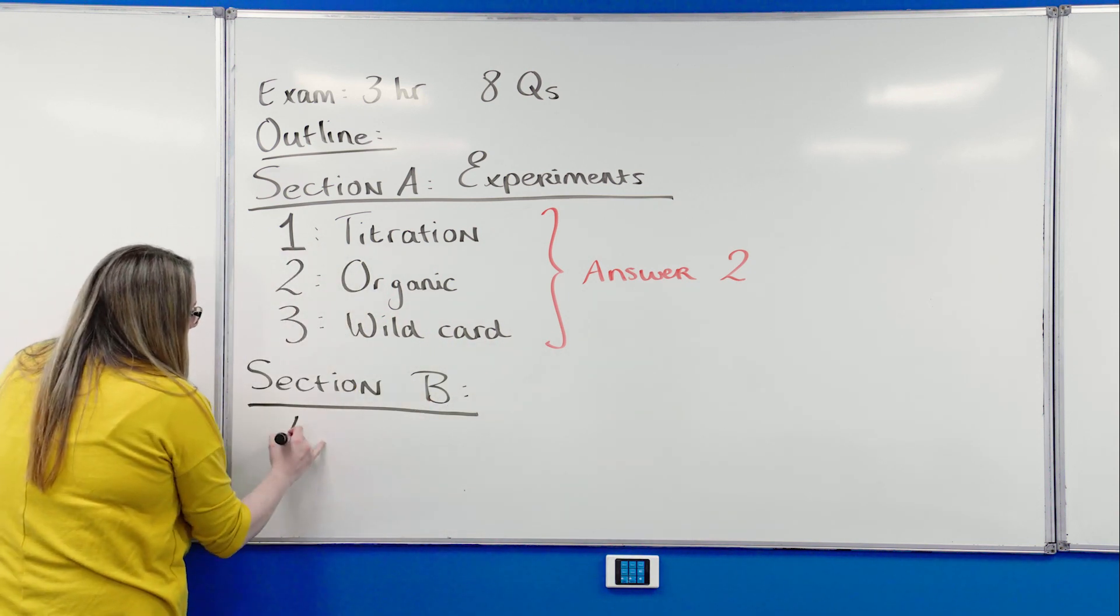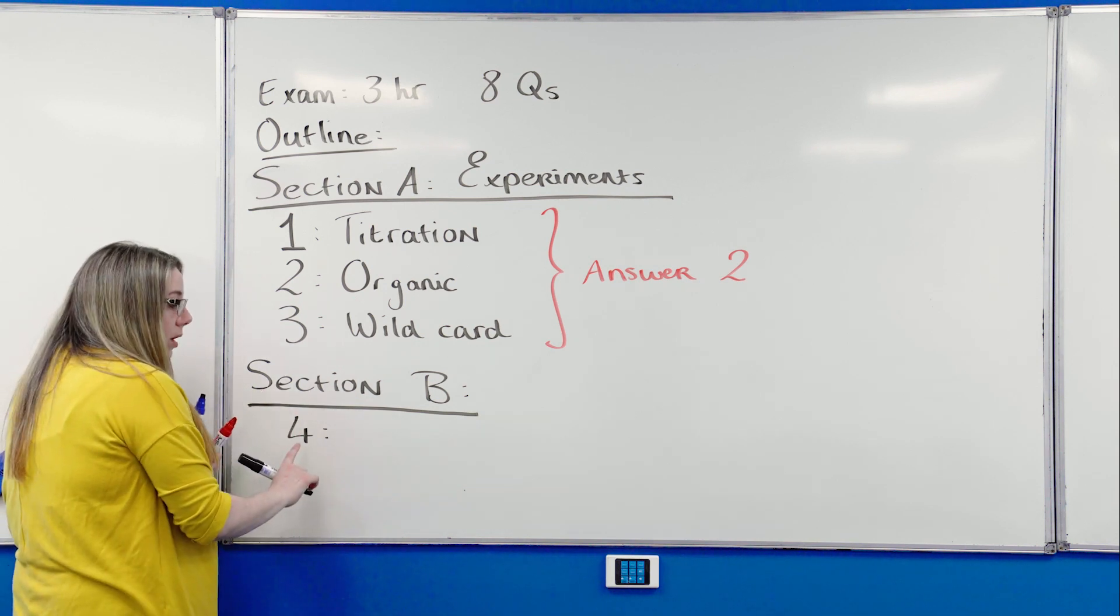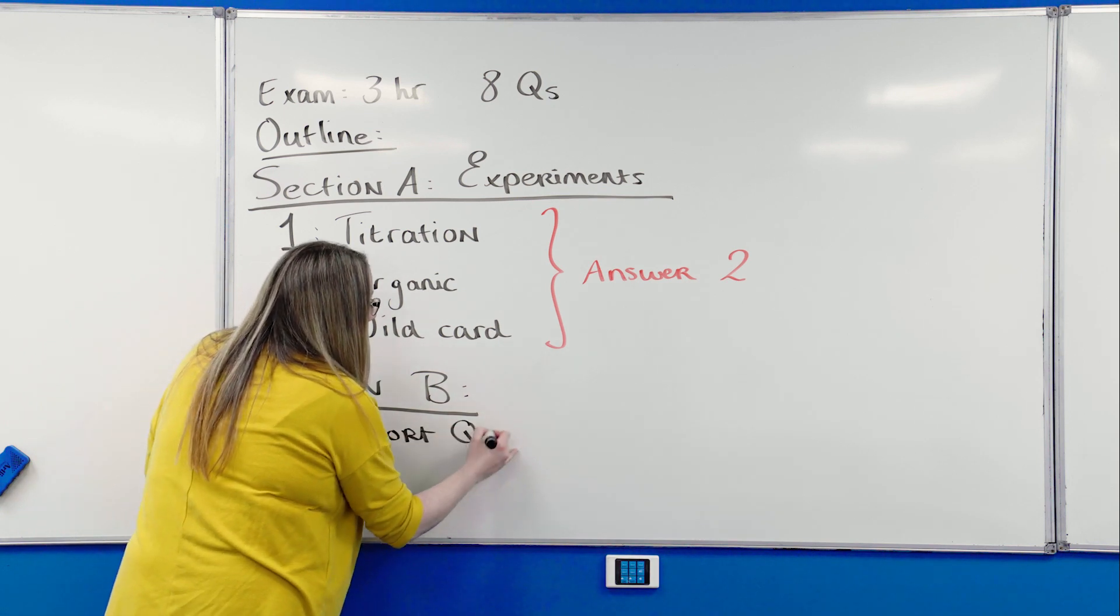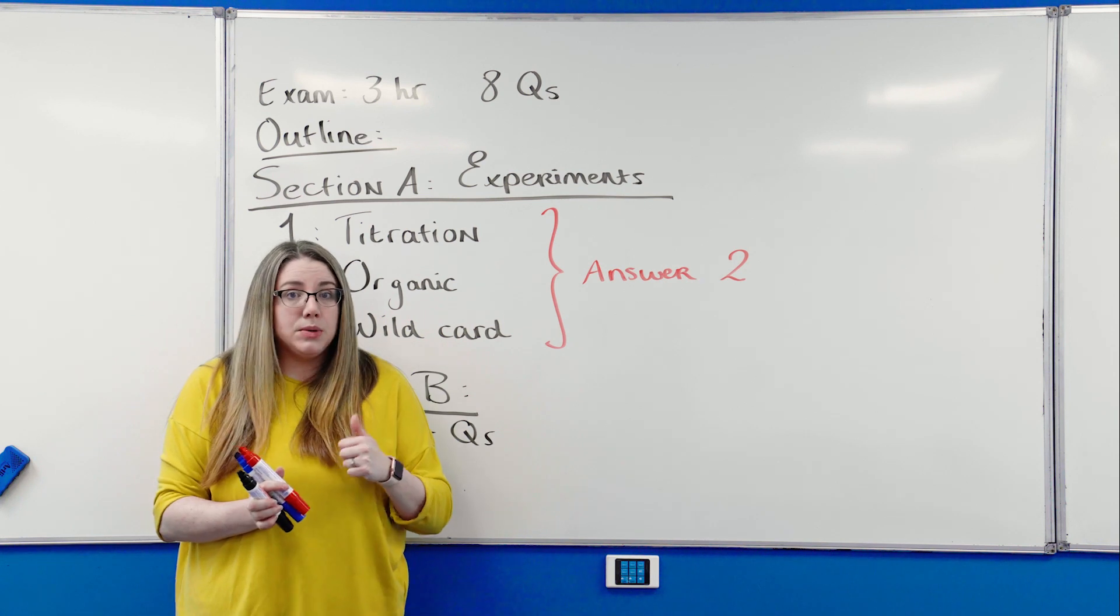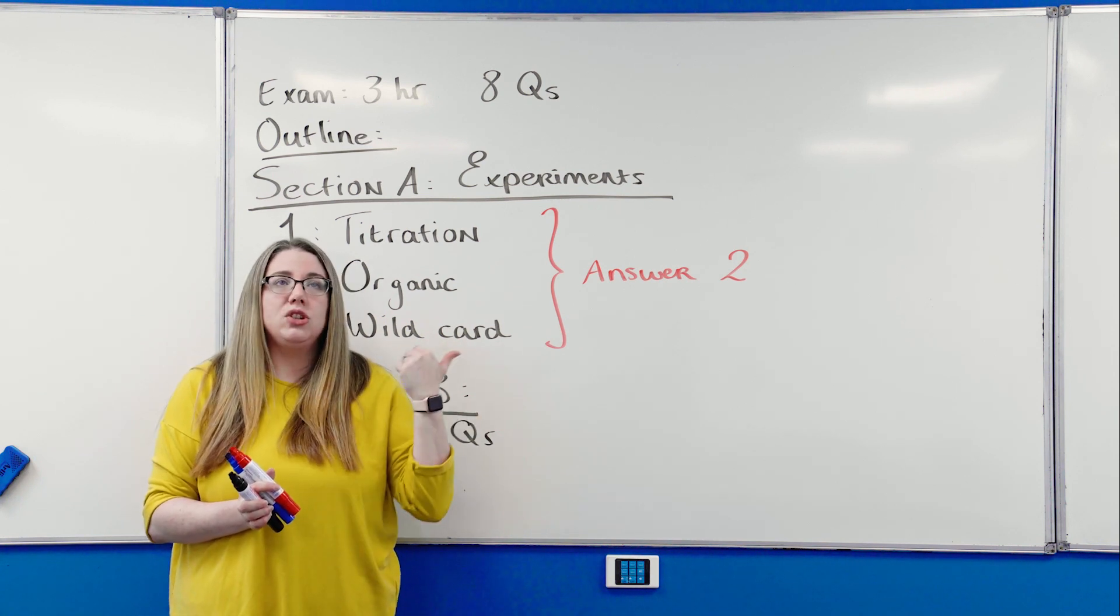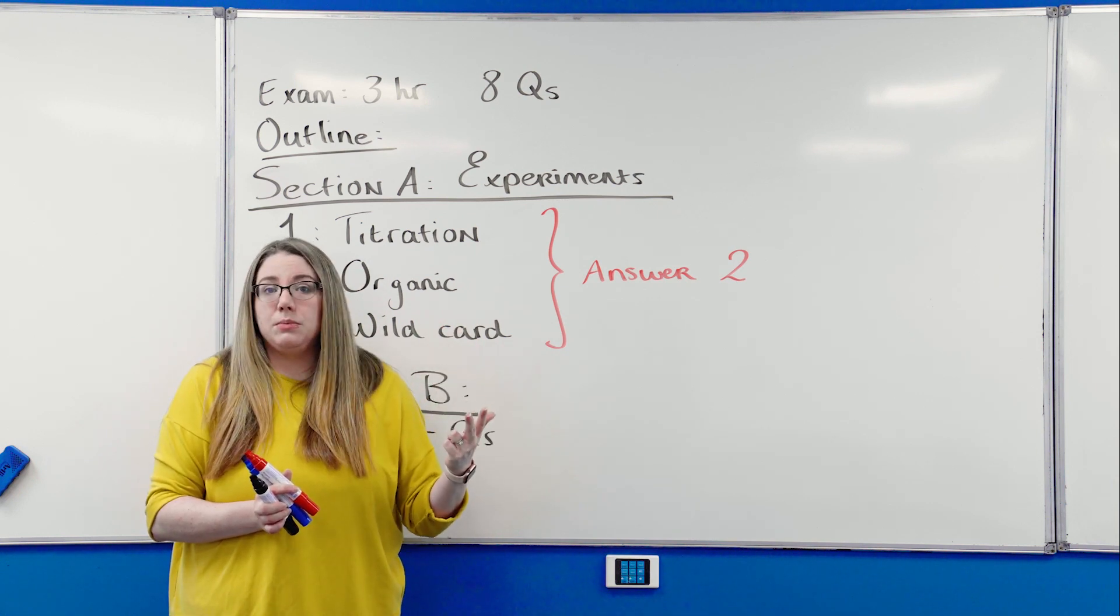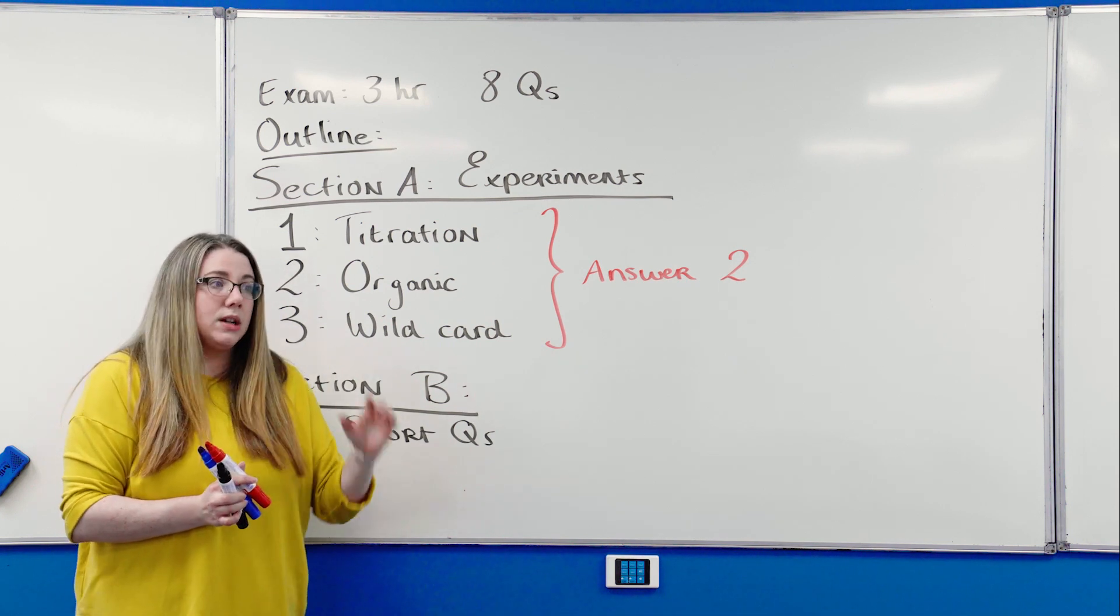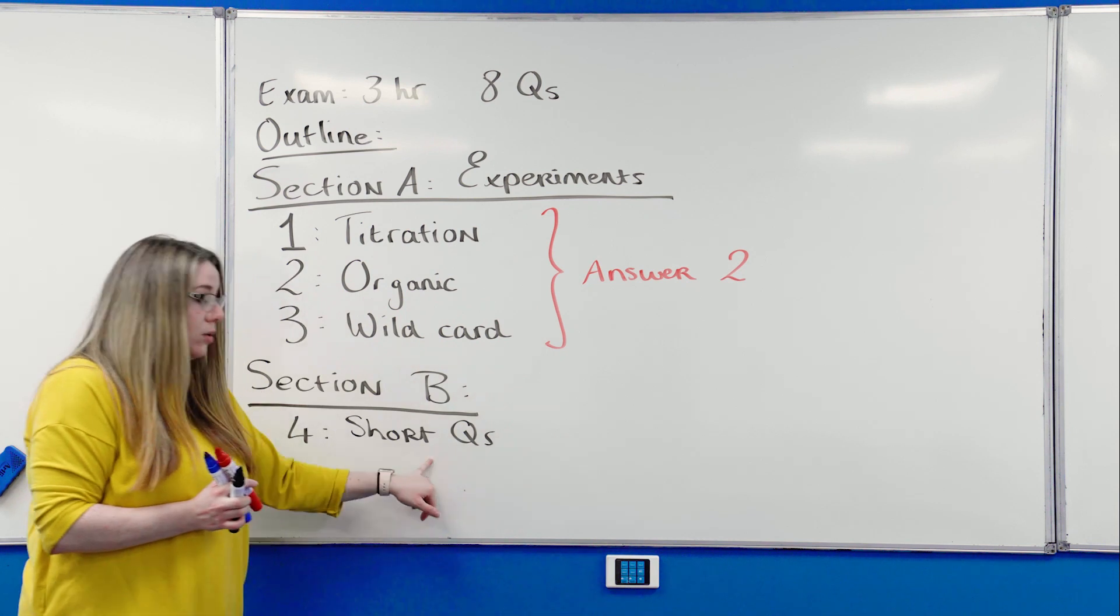In section B, the first question I would definitely recommend you go for is question four. Question four is the short questions, and it covers the whole course. There are some questions when you look at question four that are highly predictable. There's usually a question on electronic configuration or assigning oxidation numbers or writing conjugate acid bases, that kind of thing. They're lovely. They're really short, but the definitions are going to sting you here if you haven't learned them. So short questions, gold.